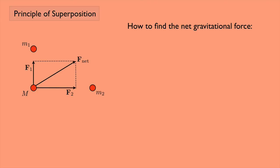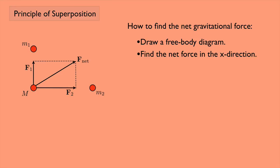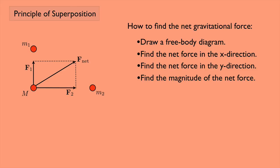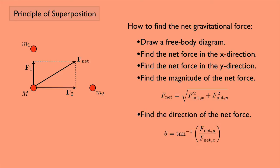So what should you do if you have to find the net gravitational force? First, draw a free body diagram. In this example, the mass big M would have a force F1 and a force F2 acting on it. Then find the net force in the x direction and the net force in the y direction — if you have a force acting at an angle, you'd have to break it into components. Then find the magnitude of the net force by taking the square root of the sum of the squares of F net x and F net y. To find the direction, use the inverse tangent of the net y component divided by the net x component.